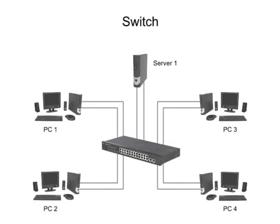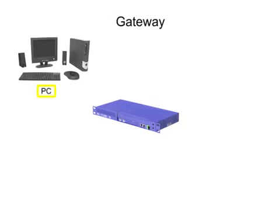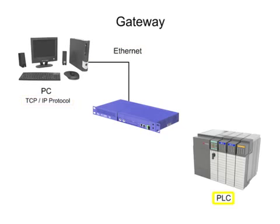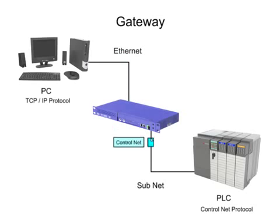When two segments of the same network have different communication formats, a gateway is needed to connect them. A gateway performs a conversion function so that a computer on an Ethernet network using a TCP/IP protocol may communicate with a PLC on a subnet using the ControlNet protocol. Even though these two protocols are incompatible, the gateway can connect them on the same network and allow them to function together.